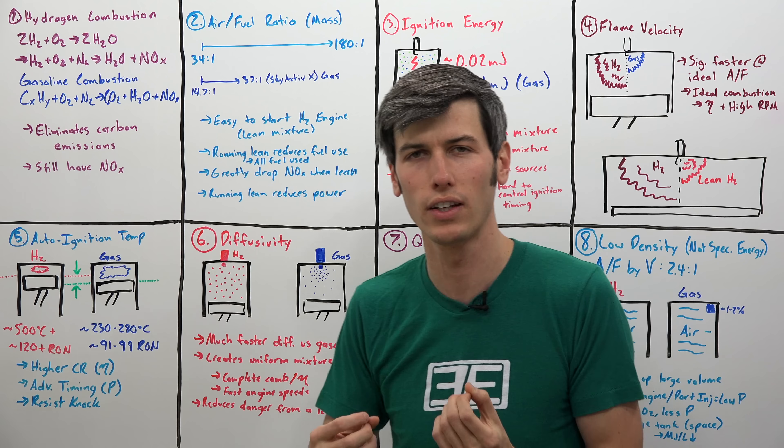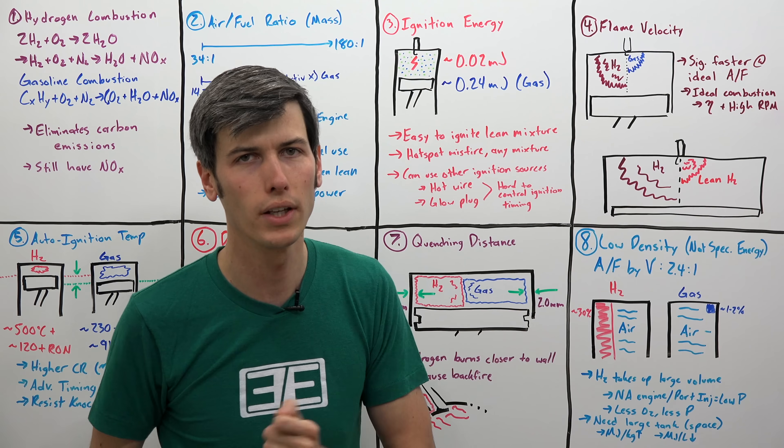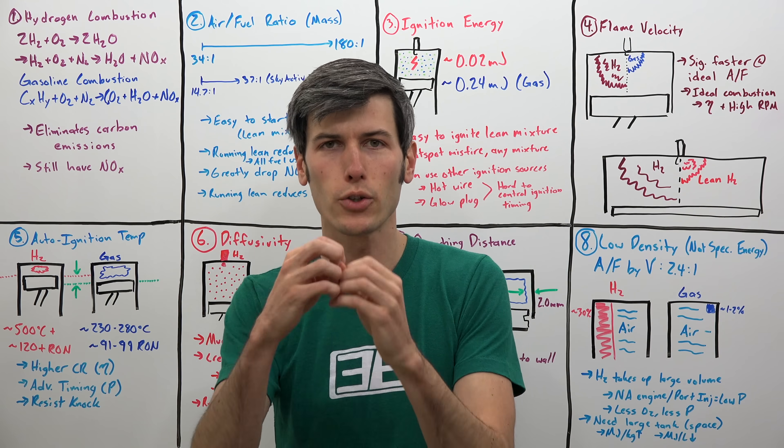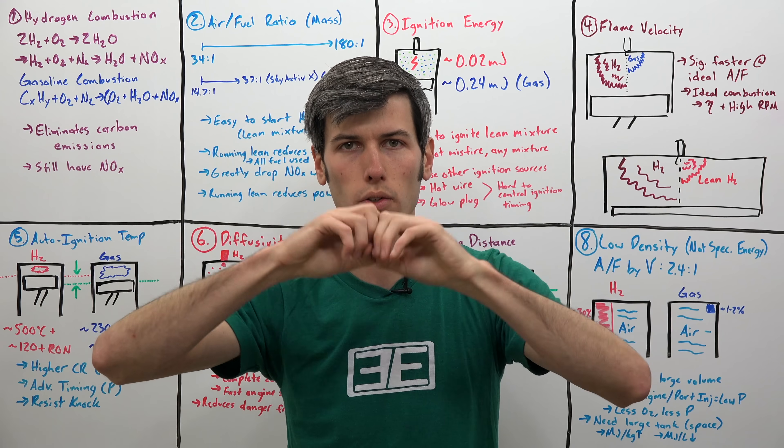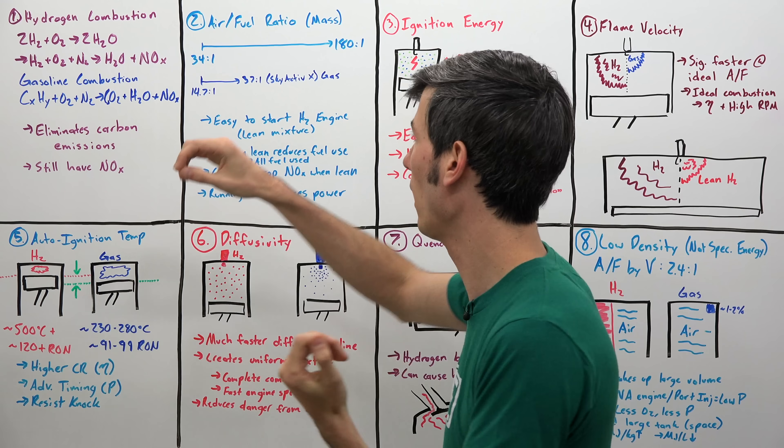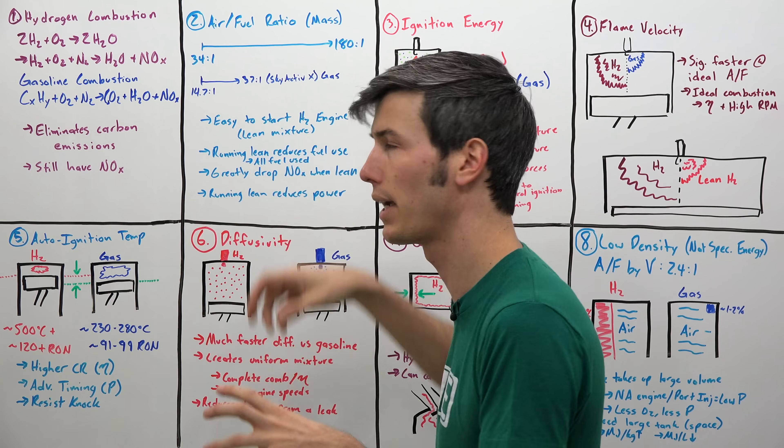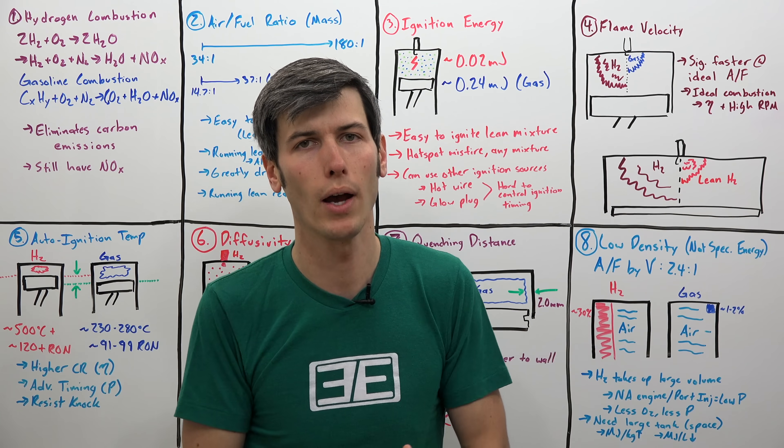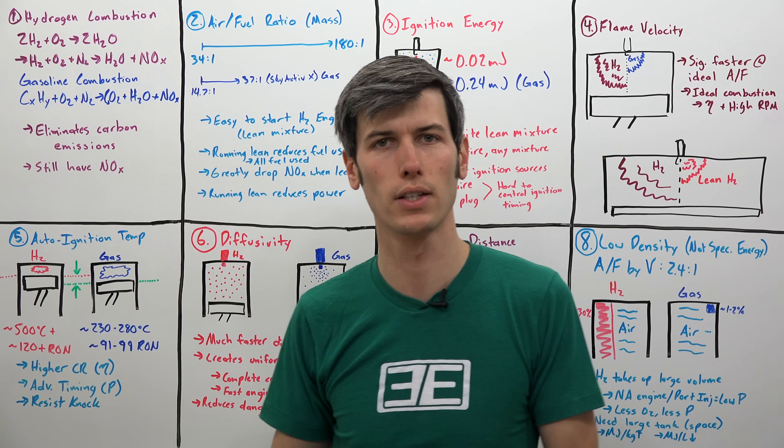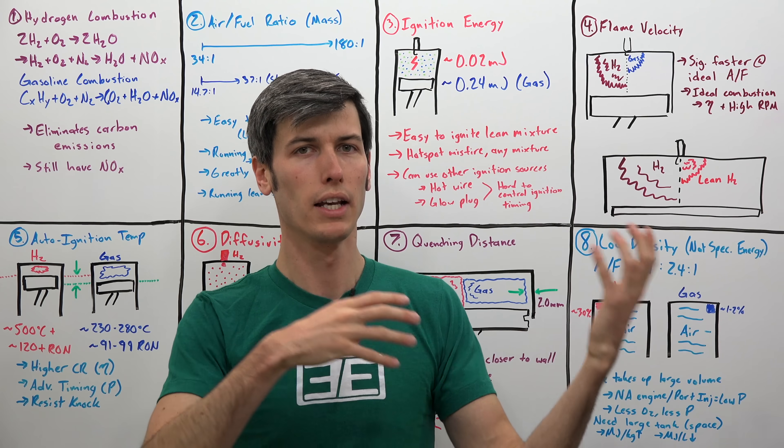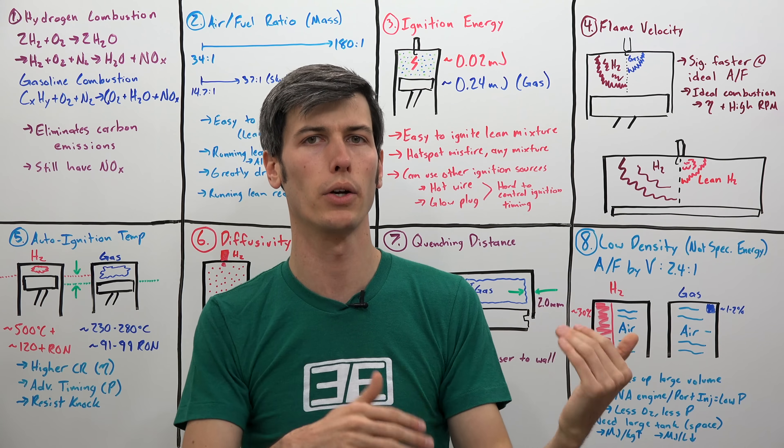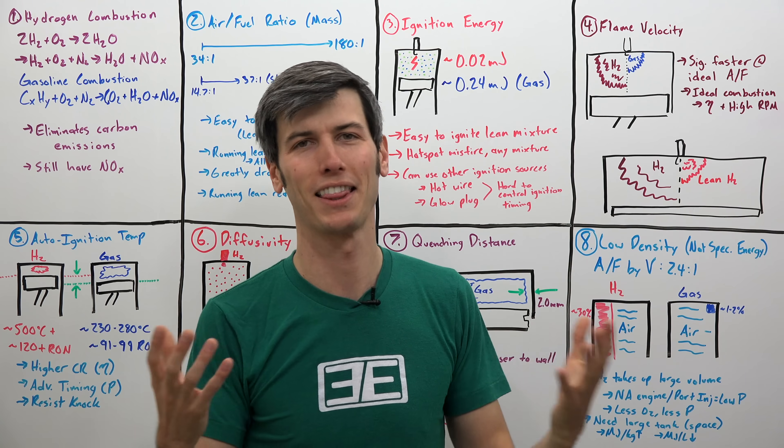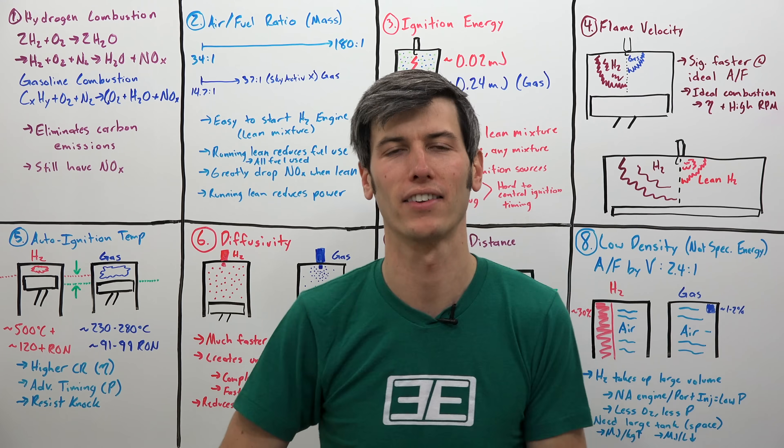It also allows you to have faster engine speeds because that fuel is spreading out very quickly combined with your high flame velocity. And it also reduces the danger from leaks. So let's say you did have a hydrogen leak somewhere on your fuel line. Well, that hydrogen as it's leaking out is going to start spreading out very quickly. And so it's very quickly going to get outside of its air fuel ratio range in which combustion could occur. So it'll spread out very quickly. If you do have a leak somewhere in your fuel system, the good news is it probably, it has a reduced likelihood of causing a thermal event of fire, bad things to happen because it will spread out so fast.